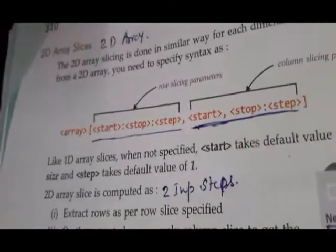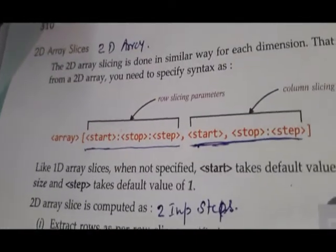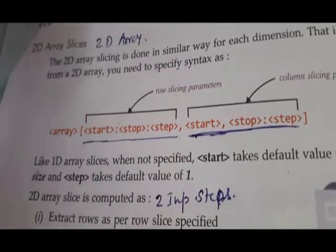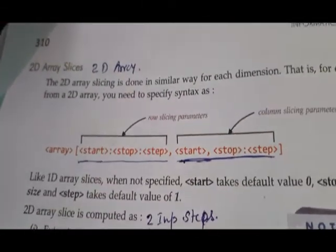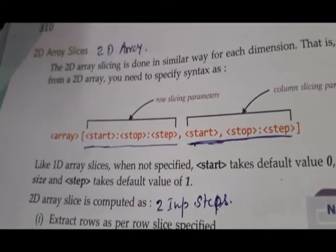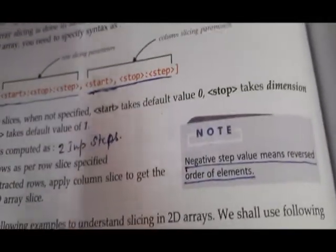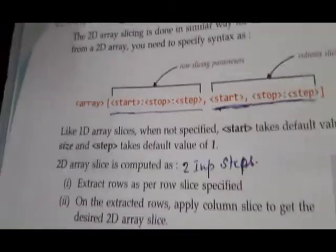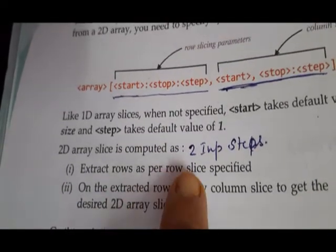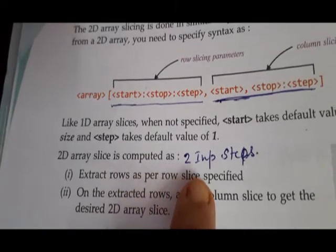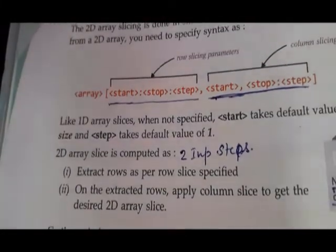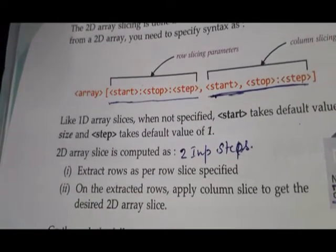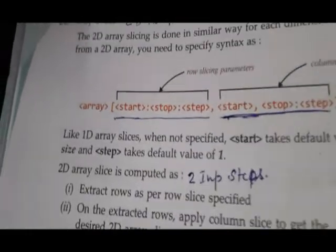Now, dear students — array slicing of 2D arrays. For a 2D array it is a little more complicated: we will have two sets of start, stop, and step values. The first set is for rows and the second set is for columns. Note: a negative step value means reversed order of elements. A 2D array slice is computed as: first, extract rows as per the slice specified, and then for those extracted rows only, apply the column slices.